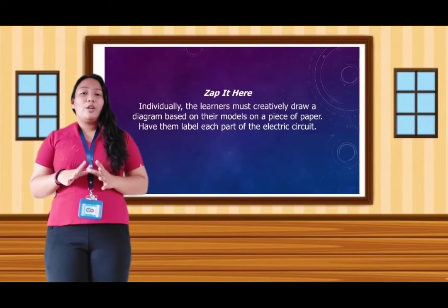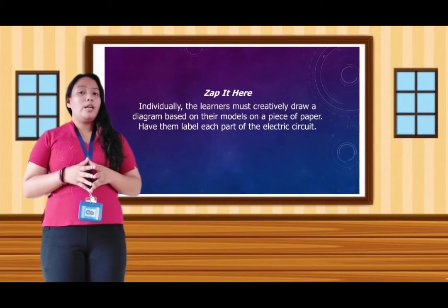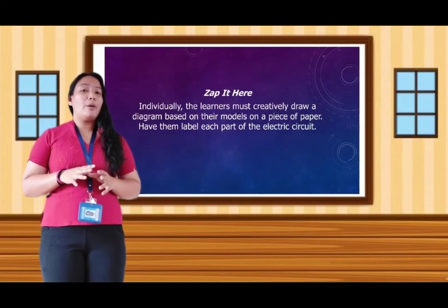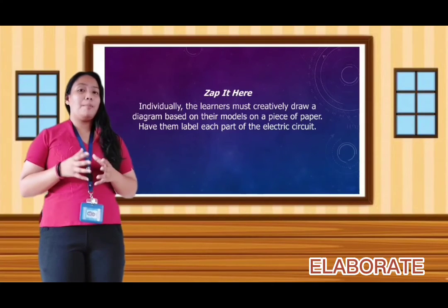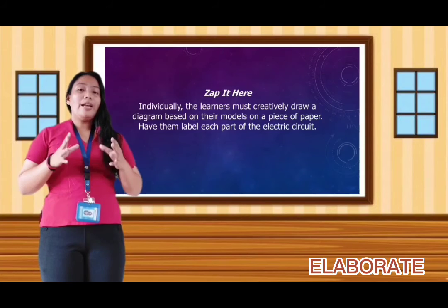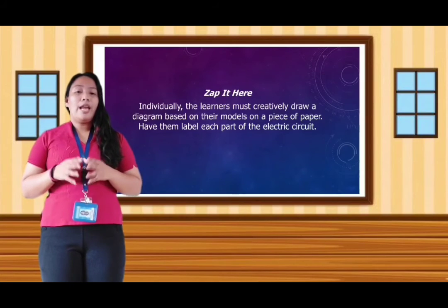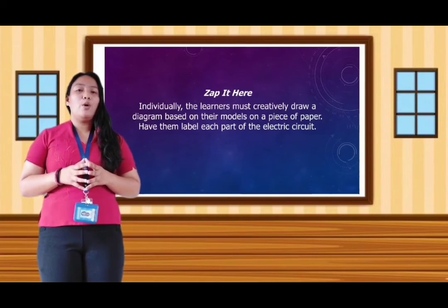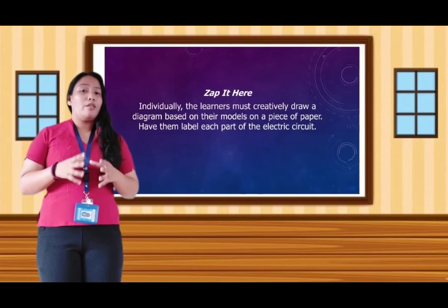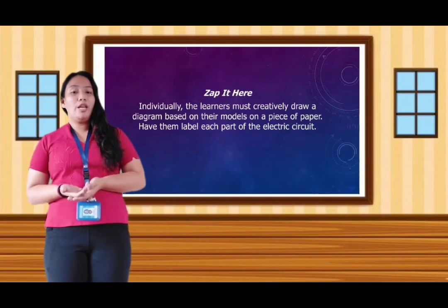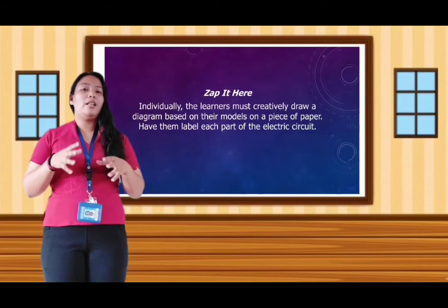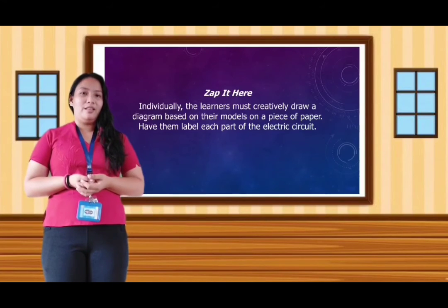We're going to have an activity called Zap It. Earlier you created a model — so right now, on a piece of paper, each and every one of you will draw that model you created earlier and label each part of that electric circuit.